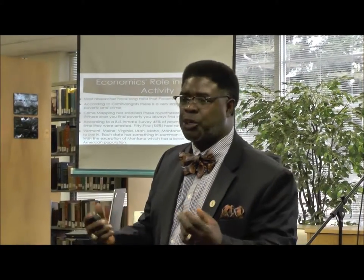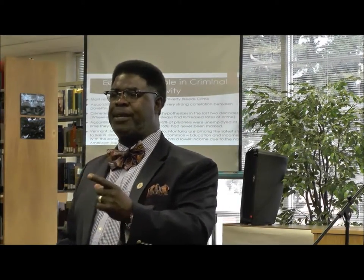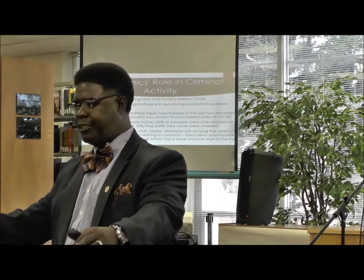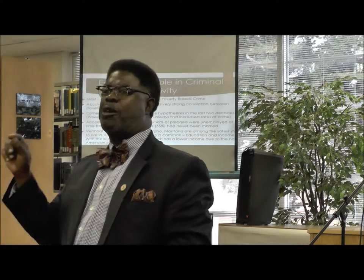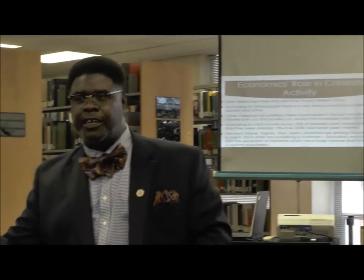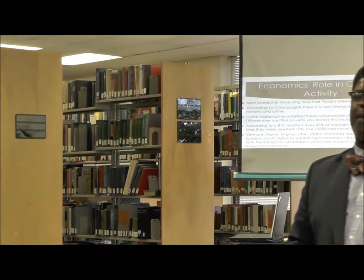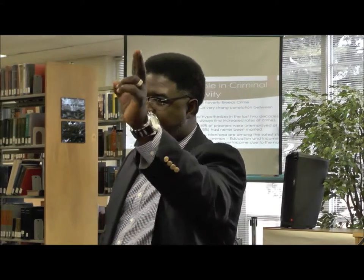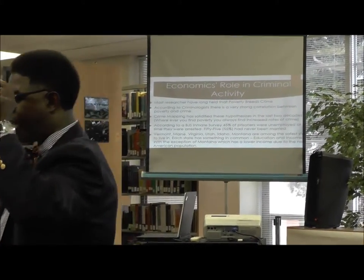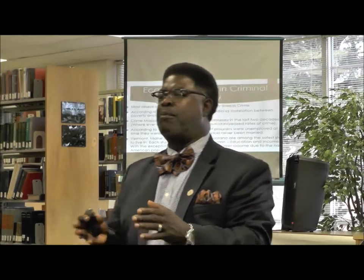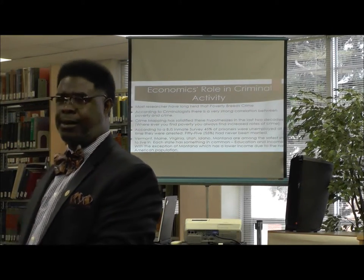Crime mapping — most major police departments have what they call crime mapping, where they take an aerial picture of a city and every time a crime is committed — a burglary, a murder, a rape, a robbery — they map it with a pin. What we've noticed with crime mapping is that the majority of street crimes take place in impoverished or low-income areas. Keep in mind there are two types of crimes: street crimes and suite crimes.